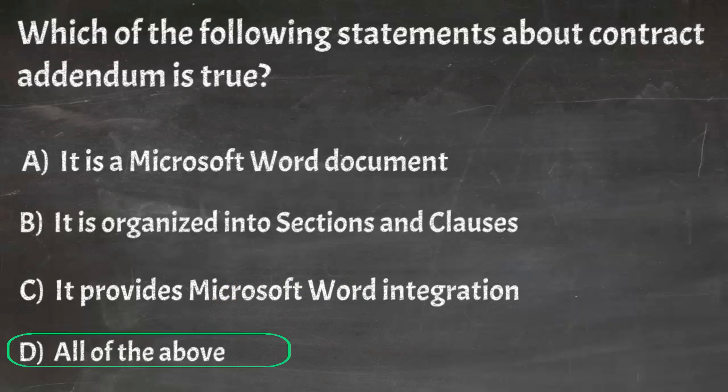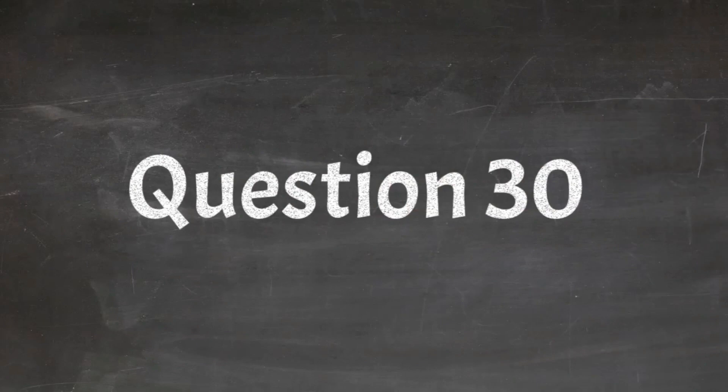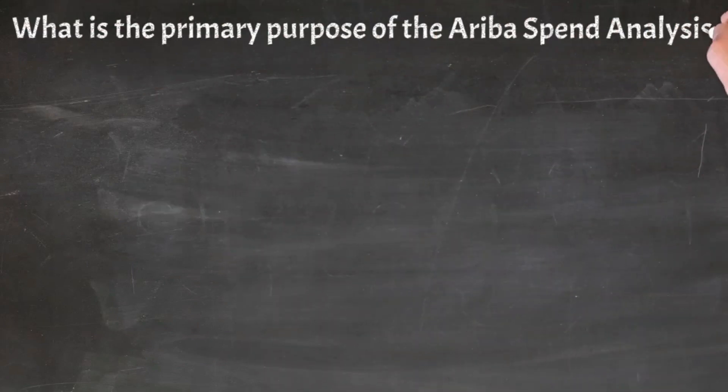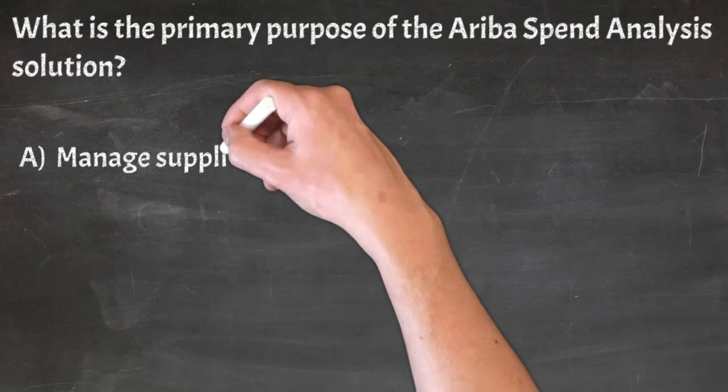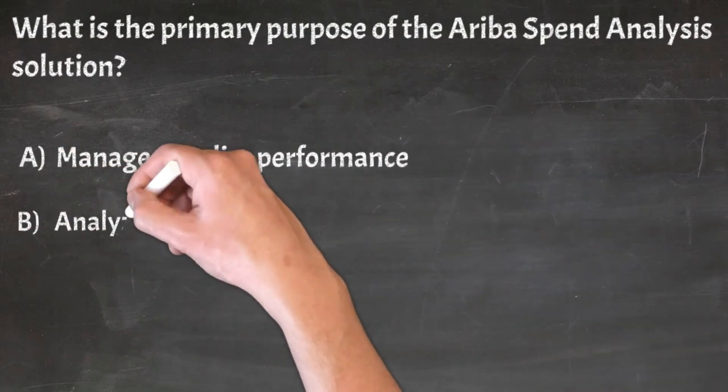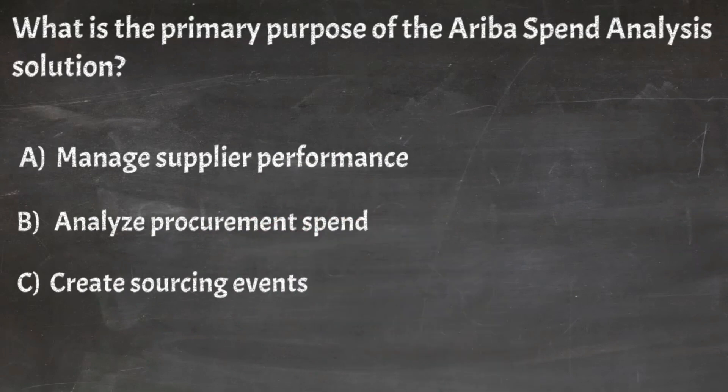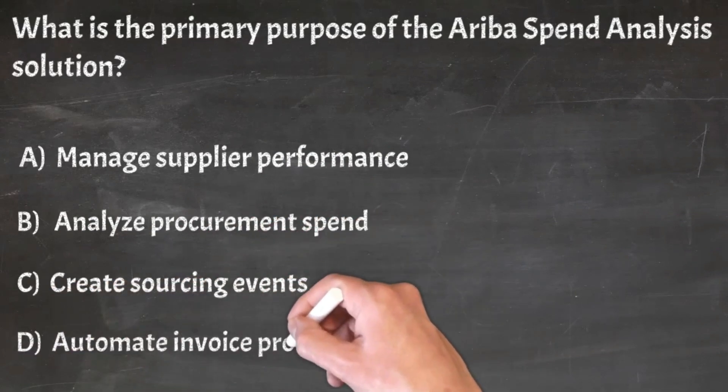Correct answer: D. All of the above. Question 30: What is the primary purpose of the Ariba spend analysis solution? A. Manage supplier performance, B. Analyze procurement spend, C. Create sourcing events, D. Automate invoice processing.